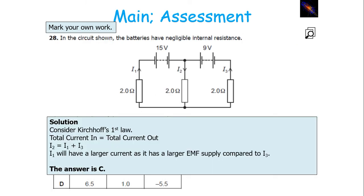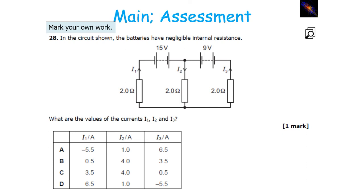Using Kirchhoff's first law — the total current into a junction equals the total current out — looking at the arrows, I1 and I3 are going into the central junction and I2 is going out, so I1 plus I3 will equal I2. I1 will have the larger current because it has a larger EMF for the same resistance. The only option satisfying this rule is C: 3.5 plus 0.5 equals 4, with 3.5 coming from the larger value, which is I1.